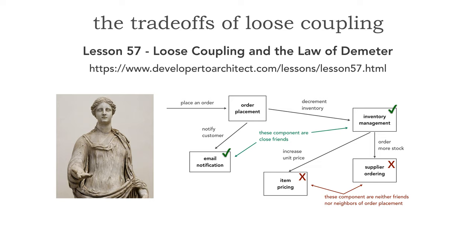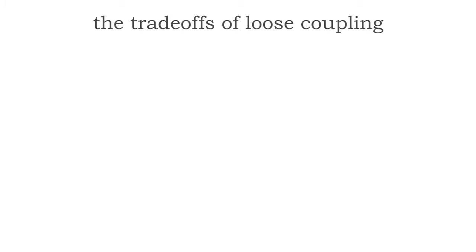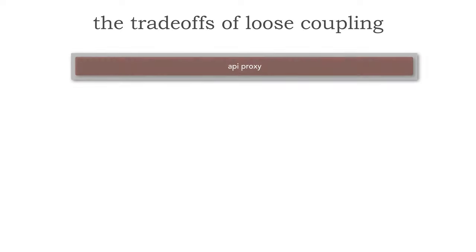Now, in the Law of Demeter, I kind of showed a way of actually building loosely coupled systems. But I didn't talk about one important factor — and that was the trade-offs of loose coupling. Let me illustrate this through a very simple microservices example. Let's say we have our API layer or our reverse proxy that fronts a lot of services in a simple order entry system.